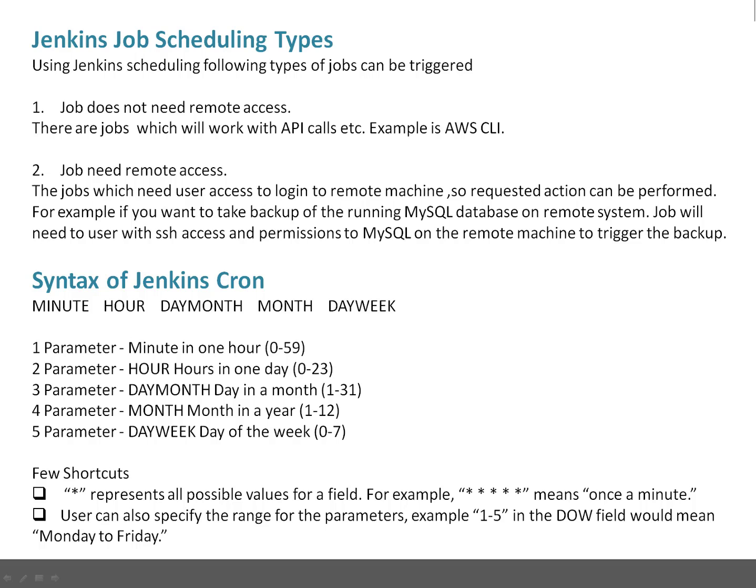The second type of job needs remote access. For example, if you want to trigger a database backup of a database running on a remote system, Jenkins needs to log into that remote machine and trigger the backup. Another example: if you want to check whether a particular service is running on a remote system and want to start it if it's not running, you need remote access. I'm going to cover a job requiring remote access in the lab session.